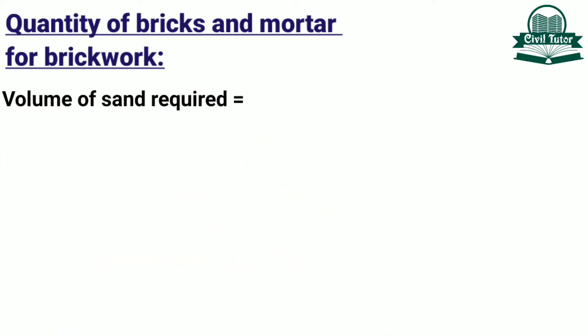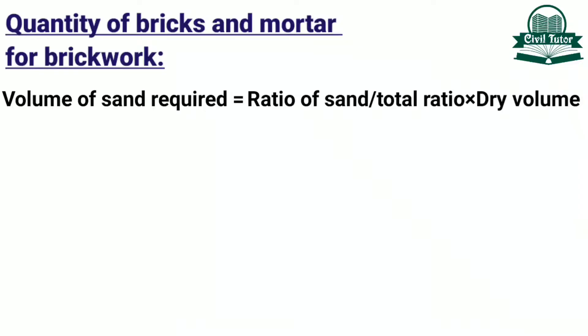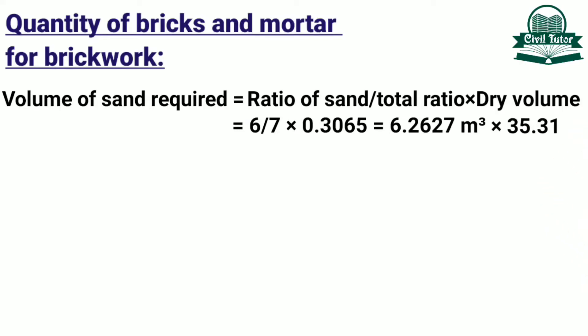Volume of sand required will be equal to ratio of sand divided by total ratio, multiplied by dry volume. The ratio of sand is 6 and total ratio is 7. So the volume of sand will be 6 ÷ 7 × 0.3065 = 0.2627 m³. To convert this volume to cubic feet, we multiply by a factor of 35.31. Hence the volume of sand required in cubic feet will be 0.2627 × 35.31 = 9.27 cubic feet.